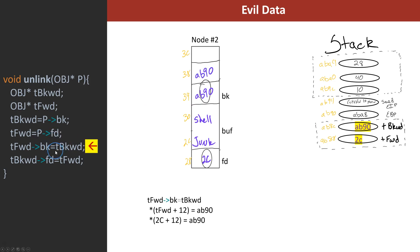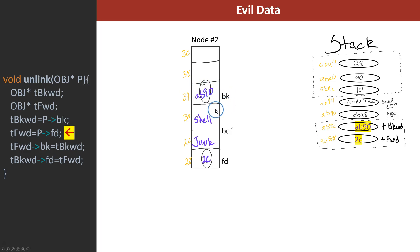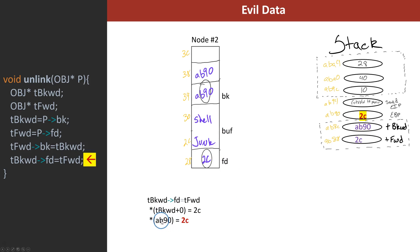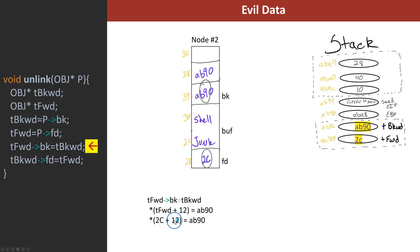We've got 2C and AB90. For T-forward, it has a record with the back in it - it's effectively a pointer. It's using T-forward plus 12. Why 12? Because the back is above this address, and the offset from the beginning is basically 4, then 8, then 12, and then AB90 starts. Once we do 2C plus 12 equals AB90, and 2C plus 12 is hex 38.